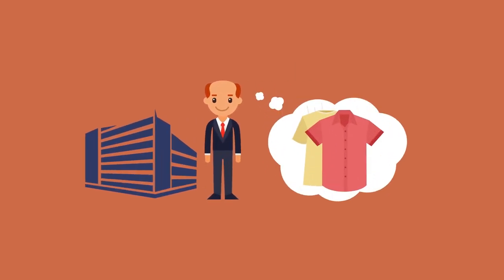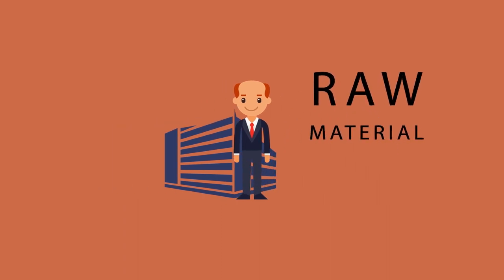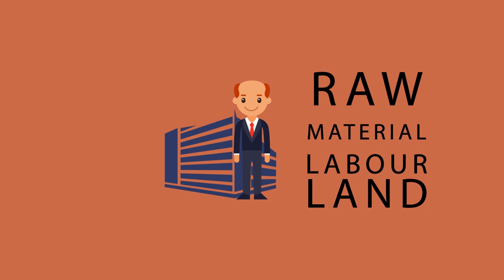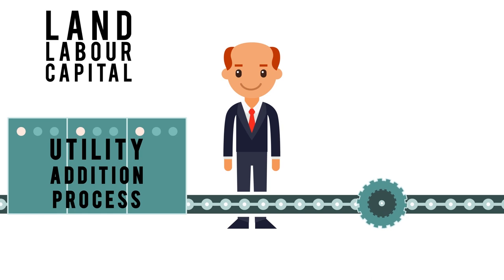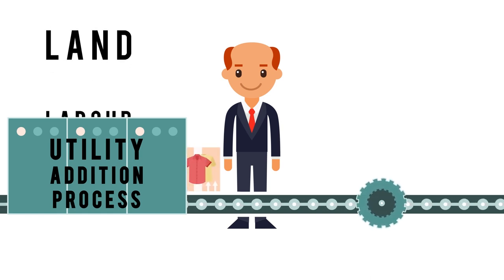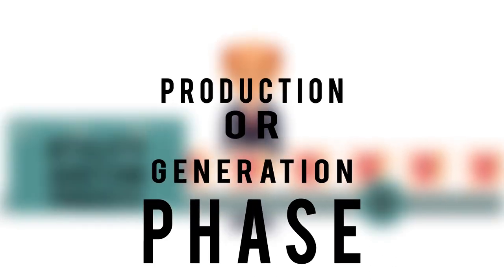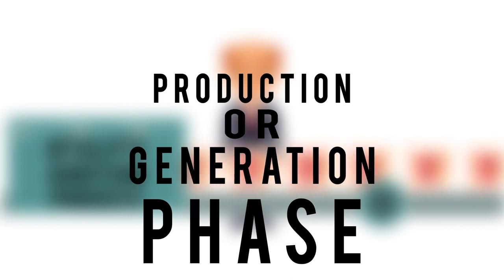For instance, let's say a firm intends to produce t-shirts. The firm will need inputs in the form of raw materials, labor, and land — which will be owned by households. The firm uses these inputs, adds value, and increases the utility of the raw material, transforming it into a product. This is the production or generation phase, concerned with the production of goods and services.